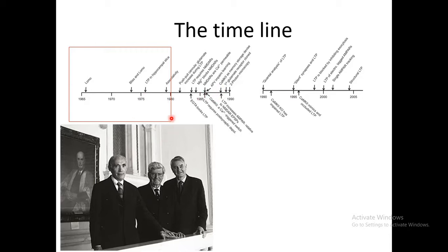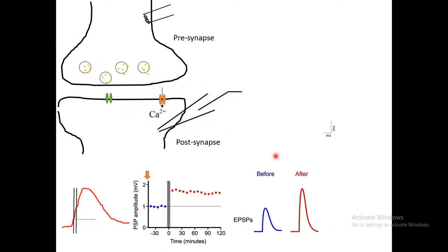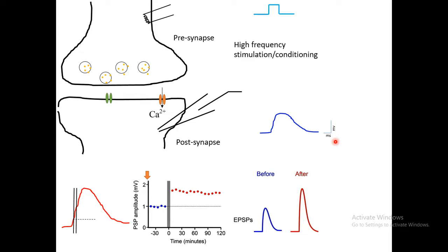How did they measure the altered strength between synapses? They stimulated the pre-synapse and recorded from the post-synapse. When they injected a small amount of current into the pre-synaptic terminal, they found they could record from the post-synapse the excitatory post-synaptic potential (EPSP), which is basically a voltage deflection. Then they applied high-frequency stimulation.